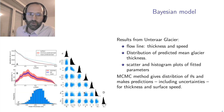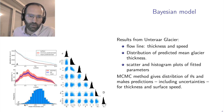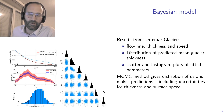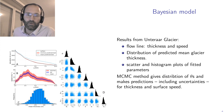Here is what the results look like. This is the flow line of Unteraargletscher along the middle. The bottom line is the bed, the top line is the surface, showing the thickness. It also calculates the flow speed — around 20–30 meters per year. It calculates the ice thickness, giving a distribution of estimated mean ice thicknesses — around 155 meters, plus or minus 5–10 meters. Here are histograms and scatter plots of the parameters. The MCMC procedure gives you both the parameters and predictions for the ice thickness.